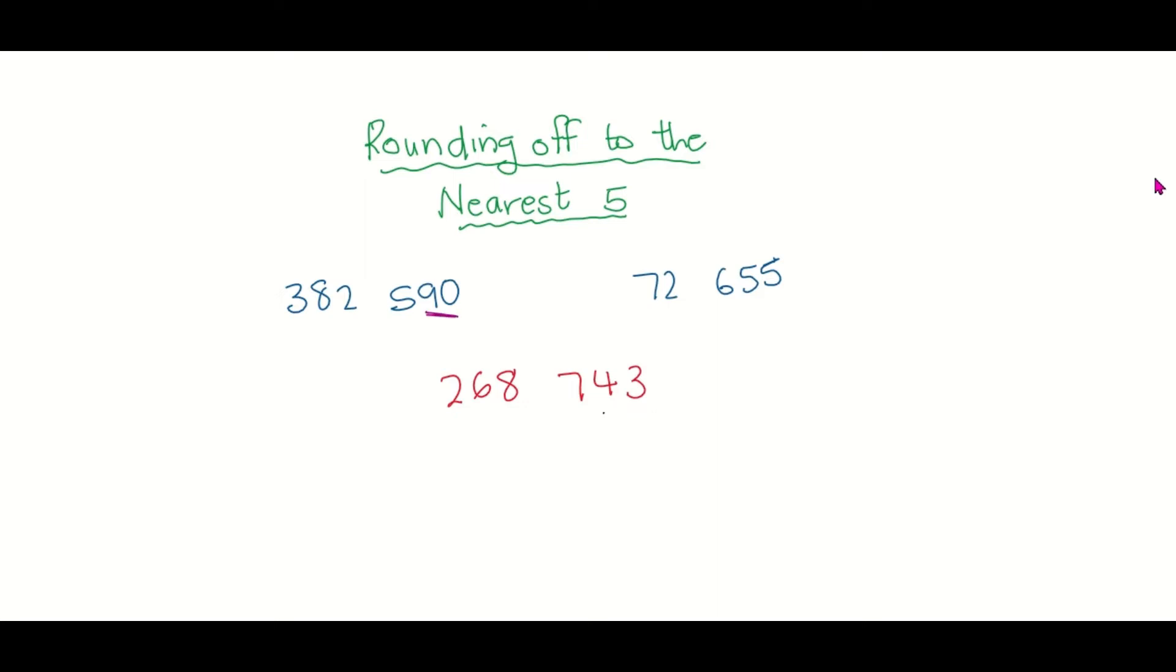If you look at the last two digits, 90 is a multiple of five and 55 is a multiple of five, so in that case there is no need to round off to the nearest five because that is the nearest five.